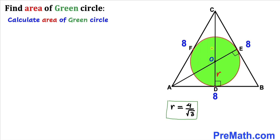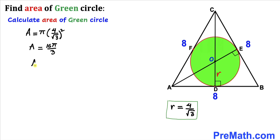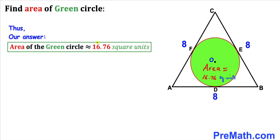Now let's calculate the area of this green shaded circle. Recall the area formula: Area = πr². Our radius is 4/√3, so the area = π × (4/√3)² = 16π/3. Plugging in the value of π, the area is approximately equal to 16.76 square units. Thus the area of this green shaded circle is approximately 16.76 square units.